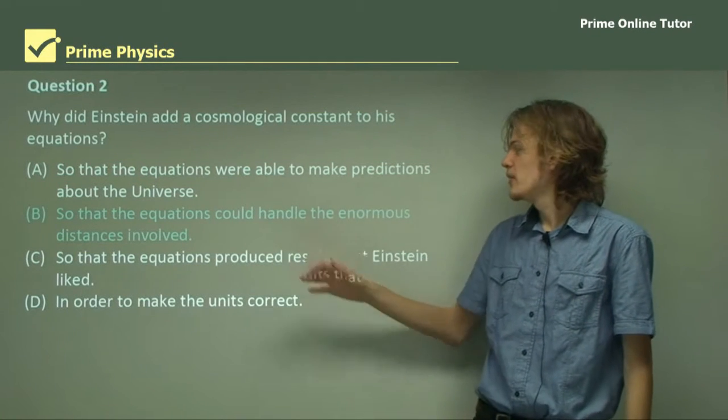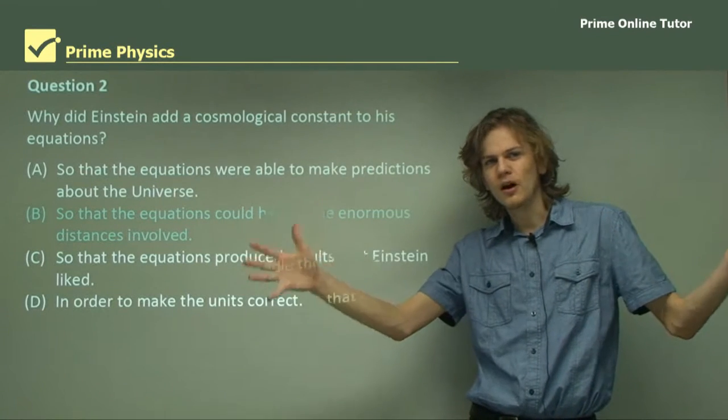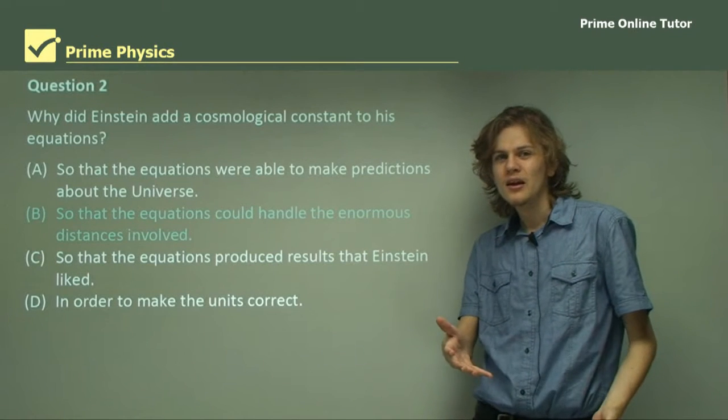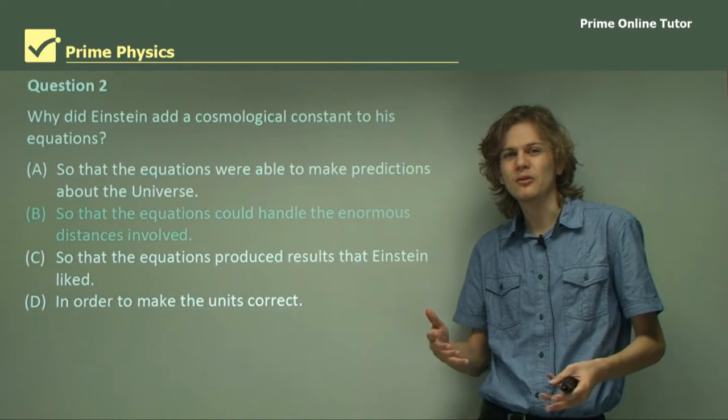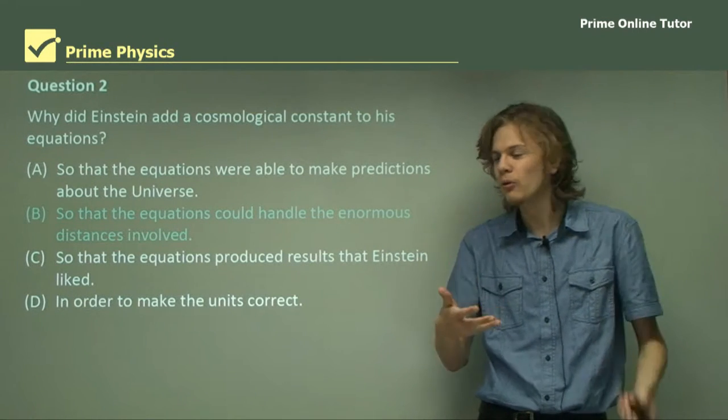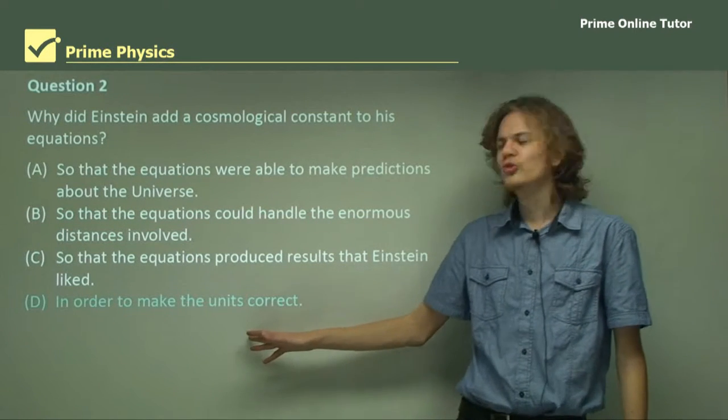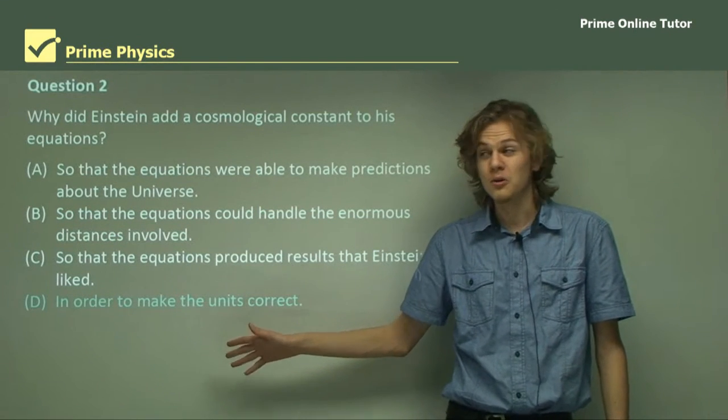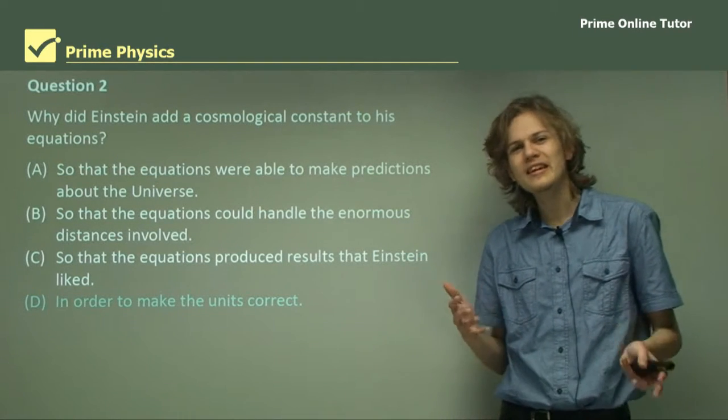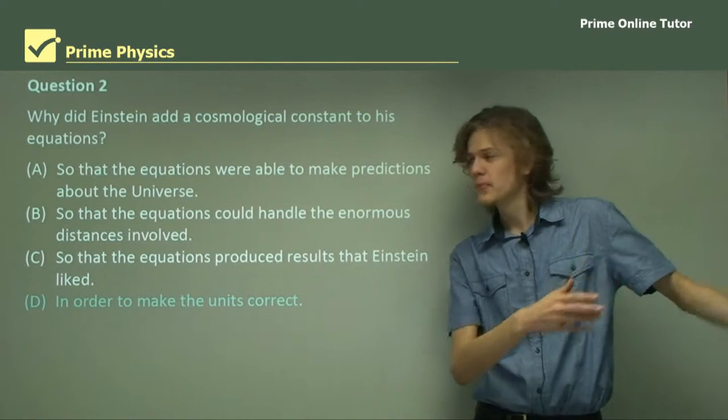So is it B then? The equations could handle the enormous distances involved. Maybe it's some sort of scaling factor that turns the big numbers into little numbers so the equation can handle them. But if you know anything about mathematics, it's that maths can handle any number at all, be it big or small. So a cosmological constant isn't really required for that. How about D, in order to make the units correct? Well, as it turns out, if all the equations are completely right, then you don't really need to make the units correct, because the units will come out correct on the other side already. So it's not D.